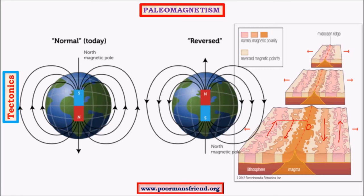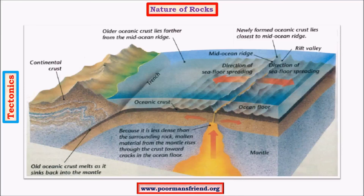Paleomagnetism explains the change in orientation of rocks based on reversals of the magnetic field. This is a very important concept and a crucial evidence for both sea floor spreading theory and plate tectonics. The equidistant rocks with matching orientations lead to the conclusion that the sea floor is spreading or extending outwards.